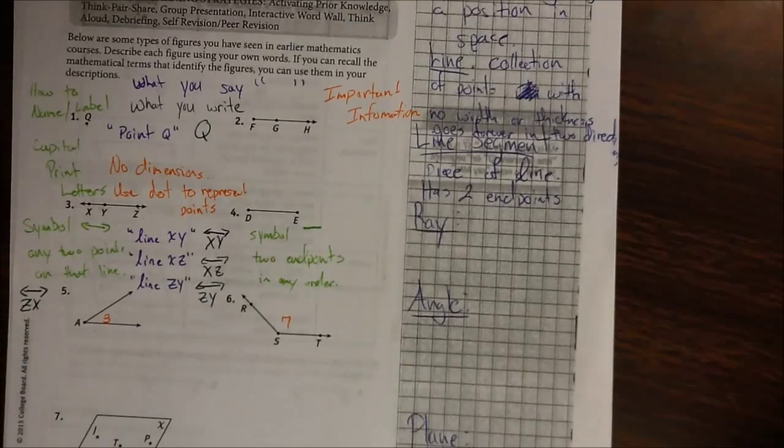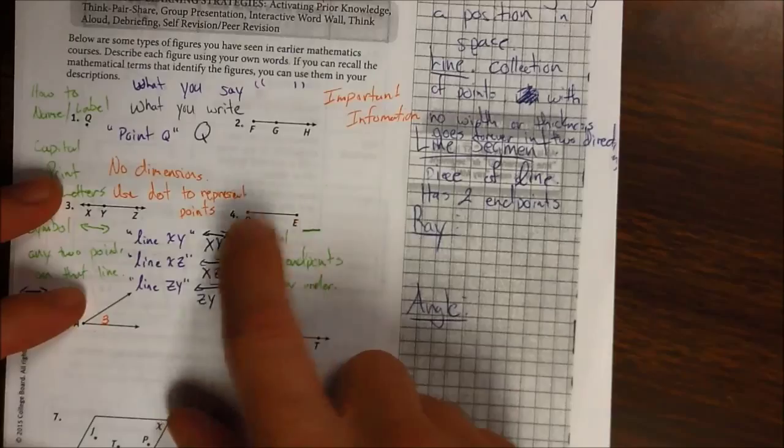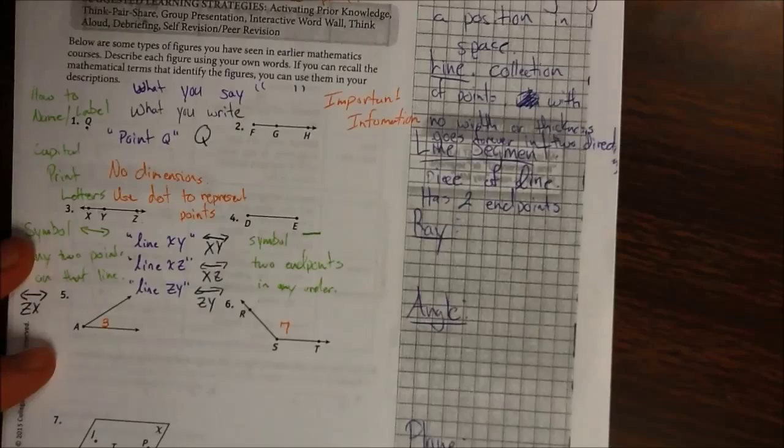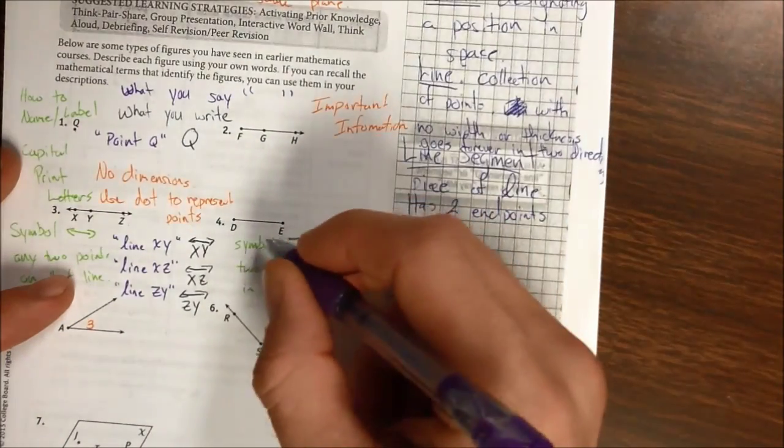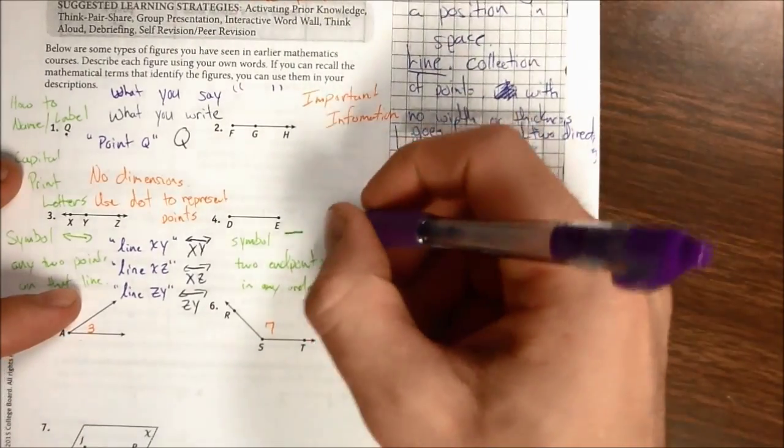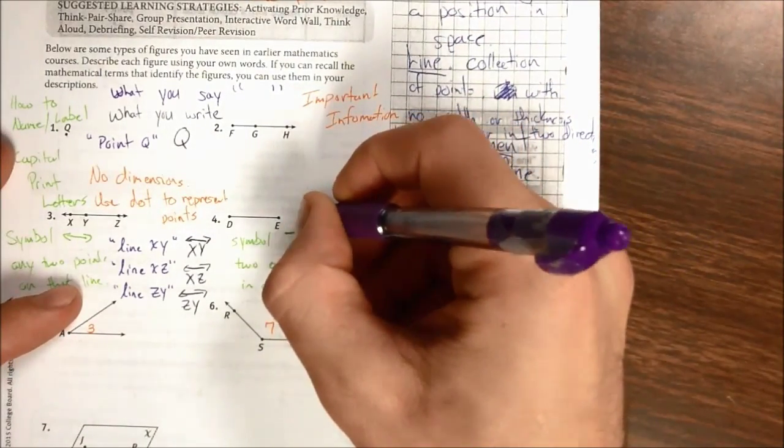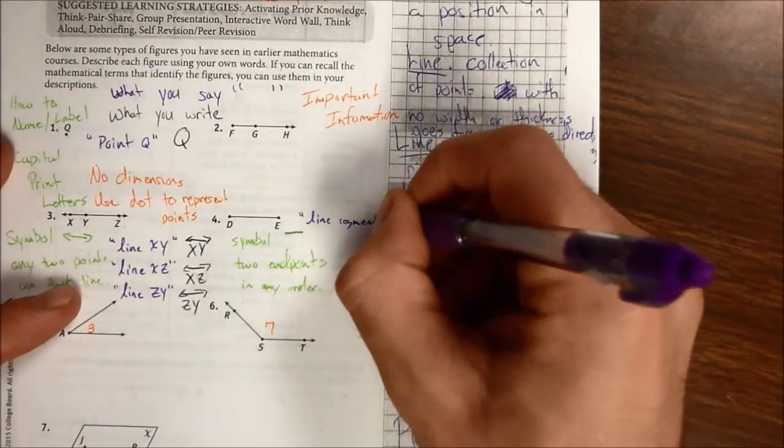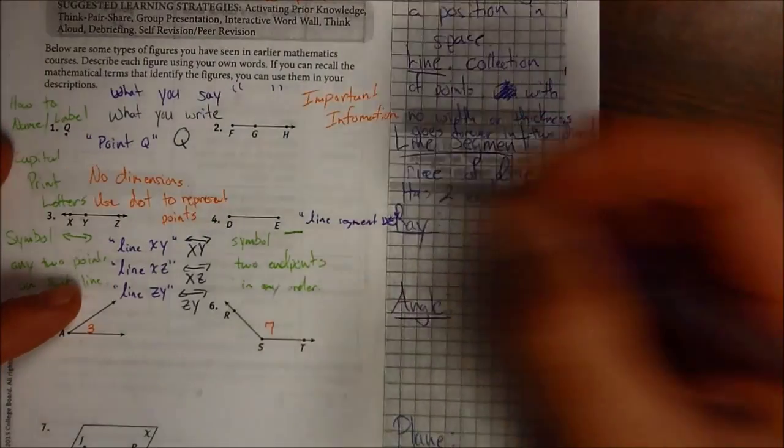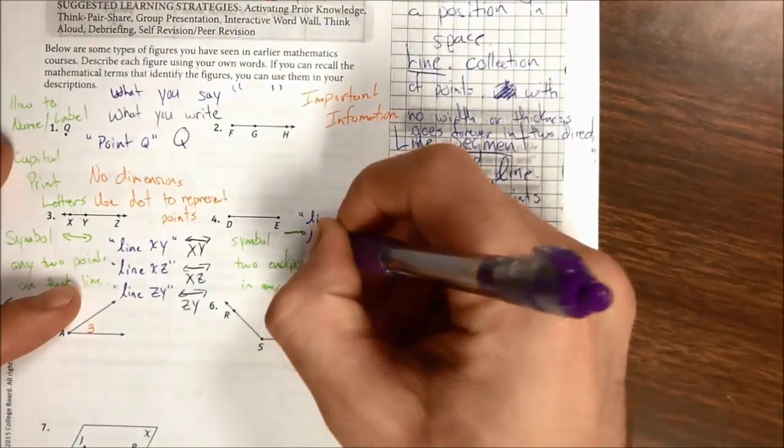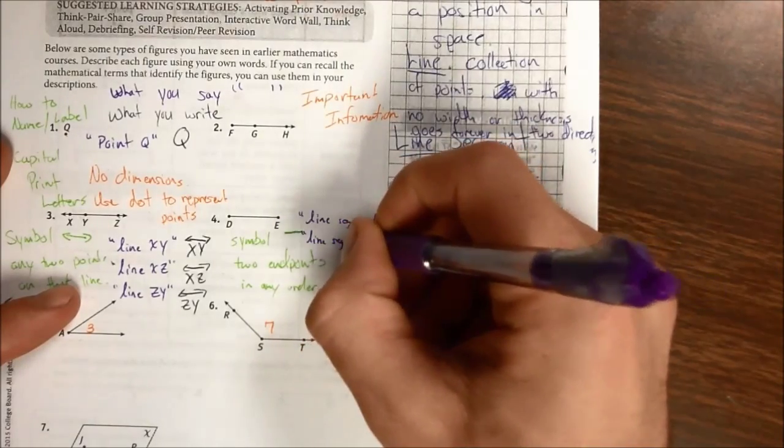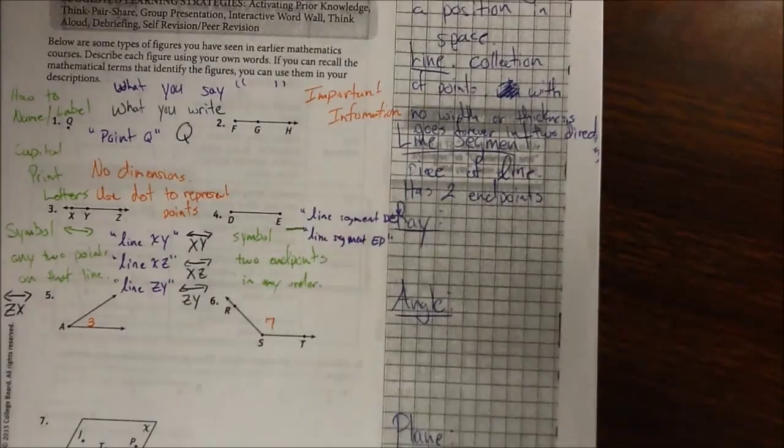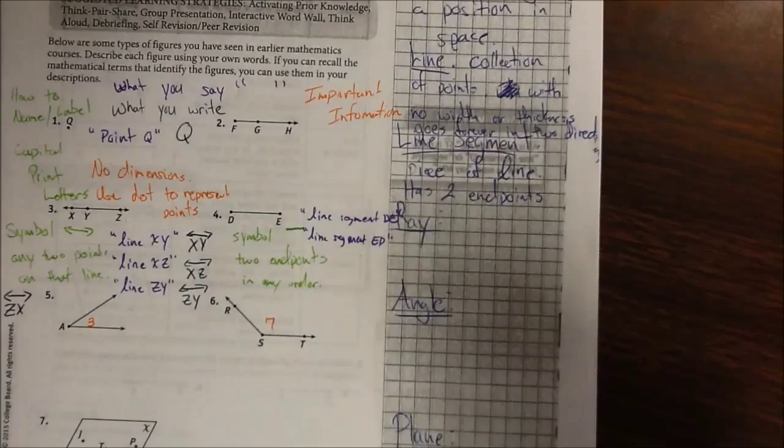So what we're going to put underneath that symbol is the two endpoints. It's the two endpoints in any order. There's only two options. You either say DE or ED. But the order does not matter. So what you would say, if you were naming this or identifying it, is you would say line segment DE or you would say line segment ED. Those are both appropriate names.